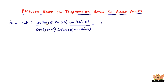cos(90° + θ): 90° + θ is in the second quadrant where cosine is negative, and since it's 90°, cosine changes to sine — so it becomes −sin θ. sec(−θ) is just sec θ, since cos(−θ) = cos θ. tan(180° − θ): 180° − θ is in the second quadrant where tangent is negative, and 180° doesn't change the ratio, so it's −tan θ.